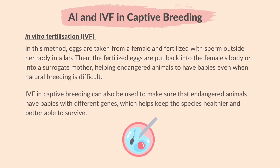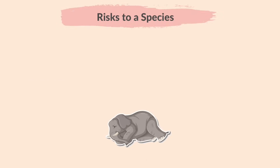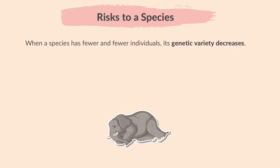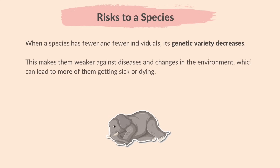IVF in captive breeding can also be used to ensure that endangered animals have babies with different genes, which helps keep the species healthier and better able to survive. When a species has fewer and fewer individuals, its genetic variety decreases, making them weaker against diseases and environmental changes, which can lead to more of them getting sick or dying. This puts them at a higher risk of extinction.